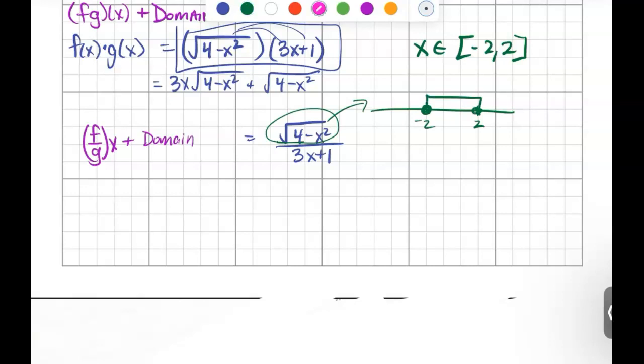But when I look, now I have a linear function, but it's in the denominator, and that makes things different. Because remember, when anything is in the denominator, it cannot equal 0. So now instead of being negative infinity to infinity, now we see that x cannot equal negative 1 third. So that means there is a new part to the number line that's negative 1 third.